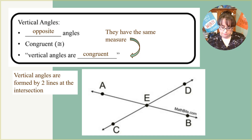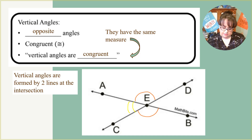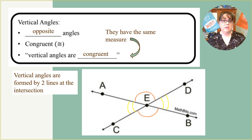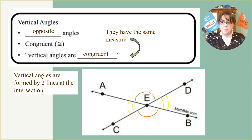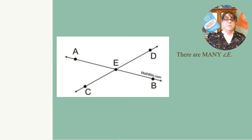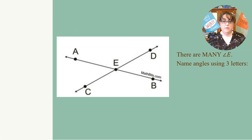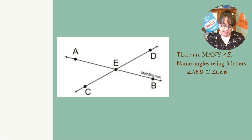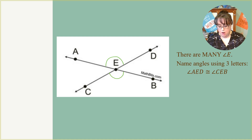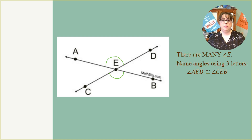Since there are many angle E's, we need to be careful how we name them, using three letters. For example, angle AED is congruent to angle CEB because they are opposite one another. We use those three-letter naming conventions so we know which angle E we are talking about.